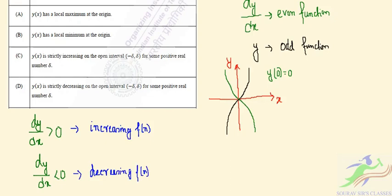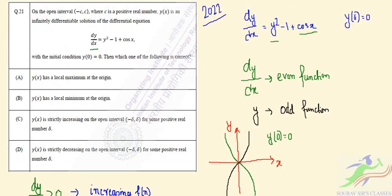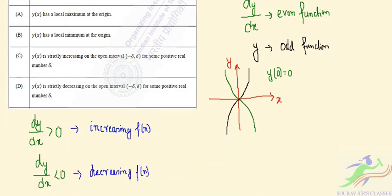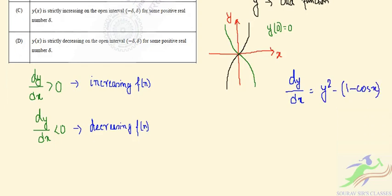Now let us check with this. We can write dy/dx from the expression. Taking minus common: dy/dx = y² minus (1 minus cos x). Using the identity 1 minus cos x = 2sin²(x/2), so dy/dx = y² minus 2sin²(x/2).